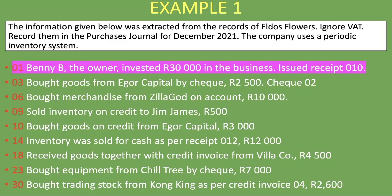On the 3rd, goods were bought from Ego Capital by check, 2,500 rand, check 02. This does not go into the purchases journal because the goods were paid for by check — meaning cash — not purchased on account or credit. So we highlight it in purple as well.